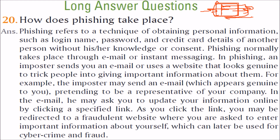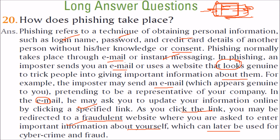Phishing refers to a technique of obtaining personal information like login credentials, passwords, and credit card details of another person without their knowledge or consent. It normally takes place through emails and instant messaging. An imposter sends an email or uses a website that looks exactly genuine to trick people into giving important information. For instance, the imposter may send an email pretending to be your bank asking you to update your information by clicking a link, which redirects you to a fraudulent website where you enter sensitive information that can later be used for cyber crime.